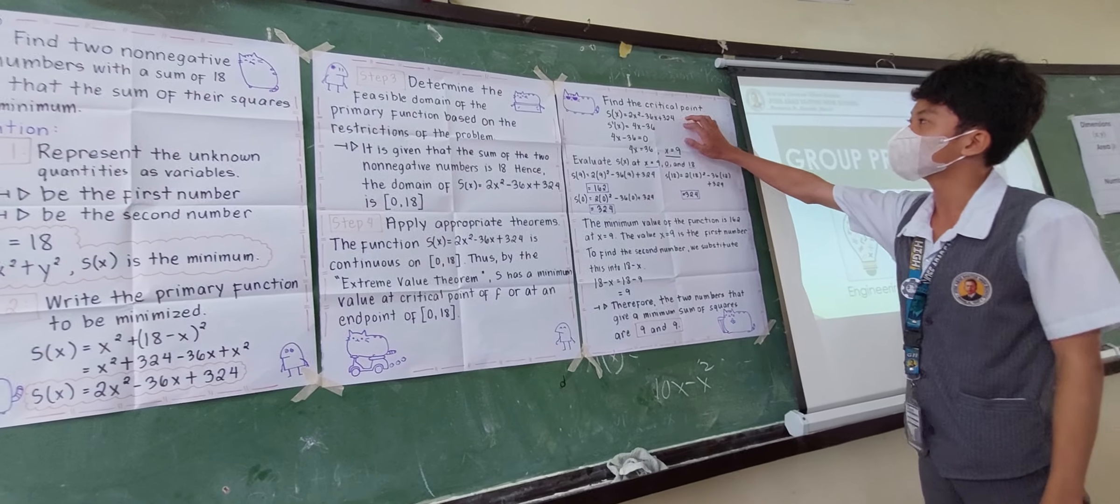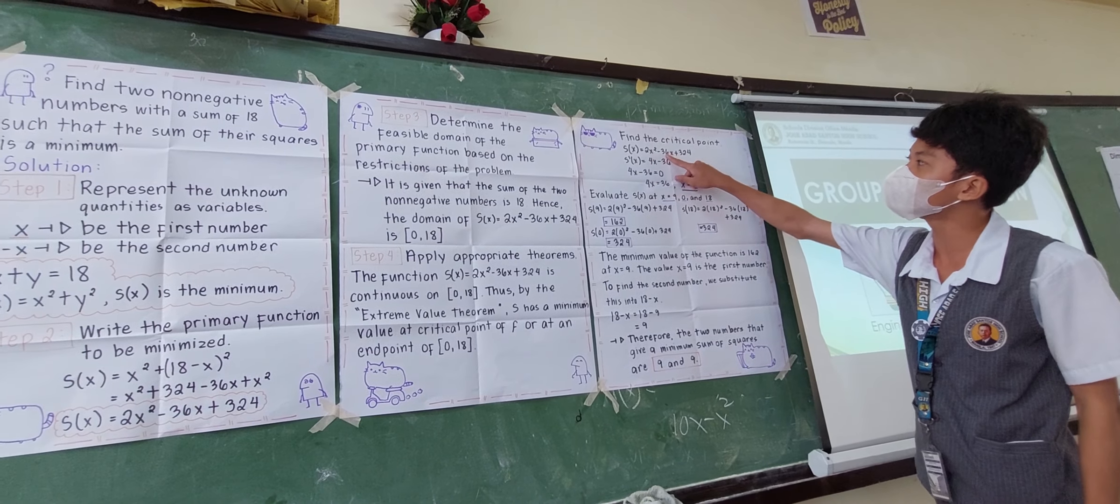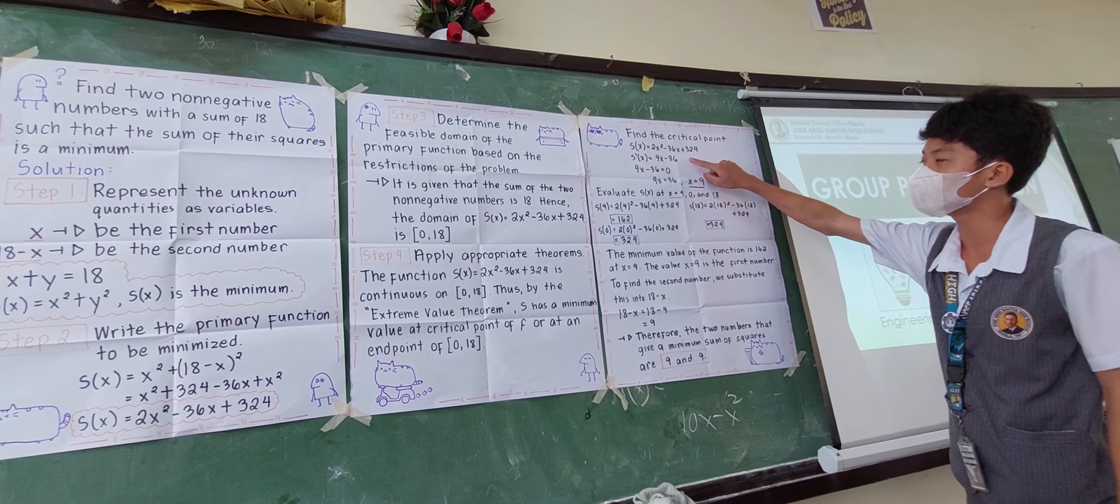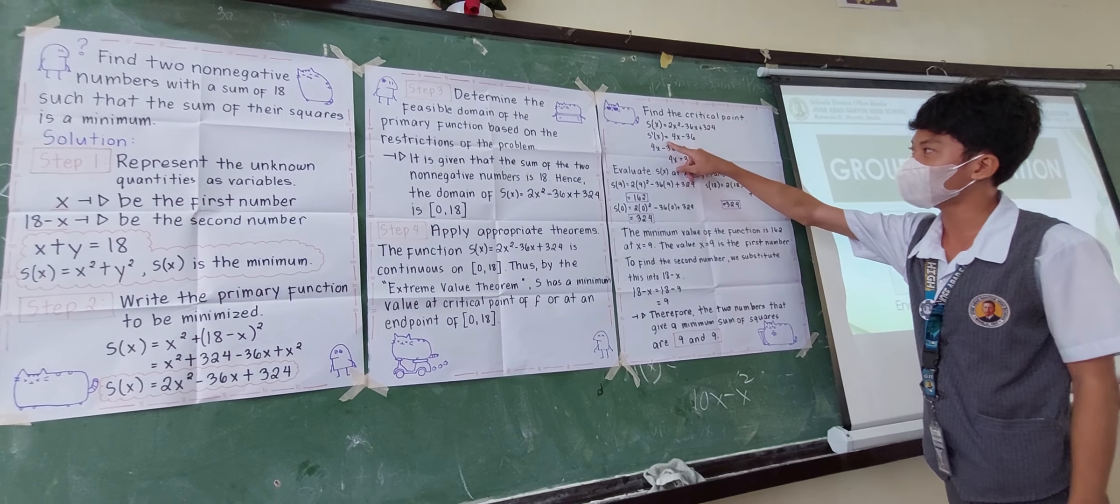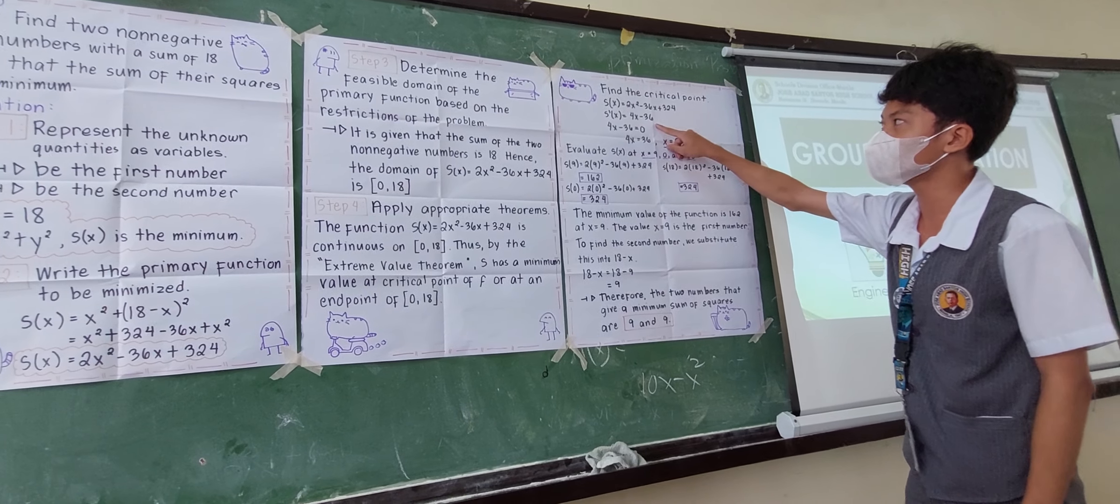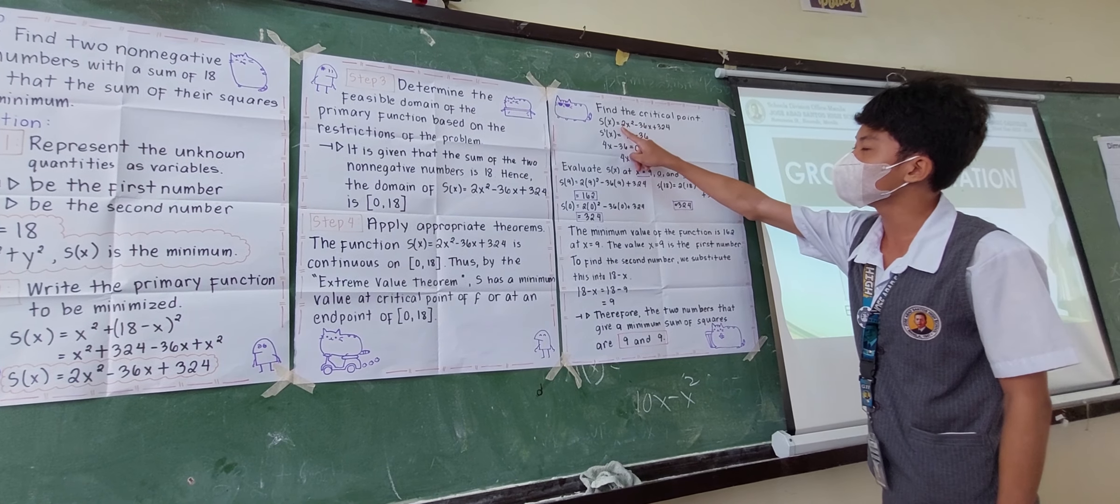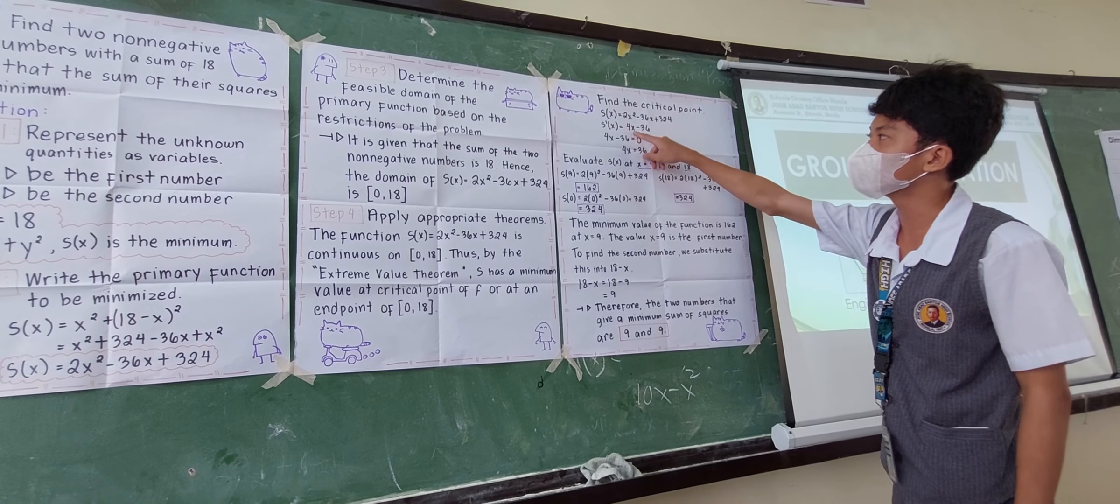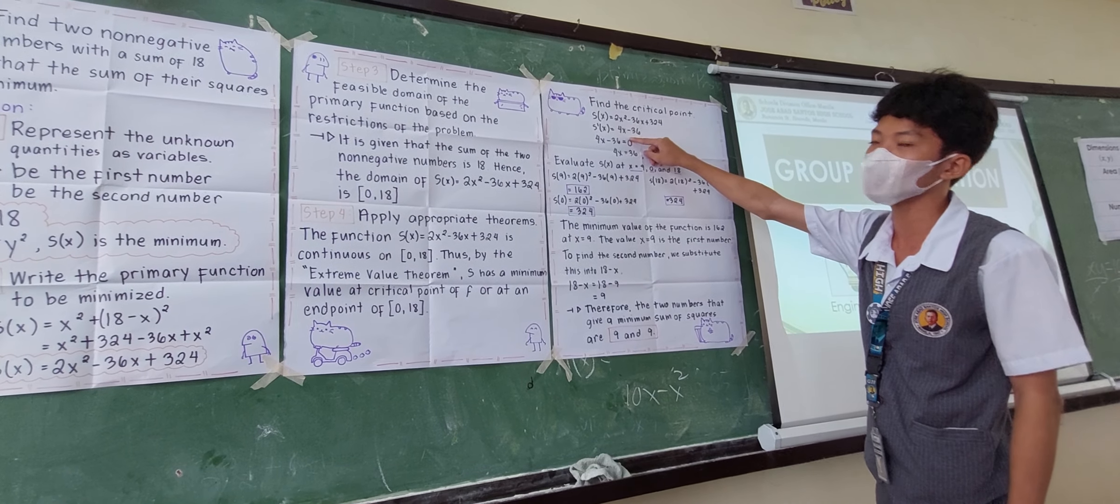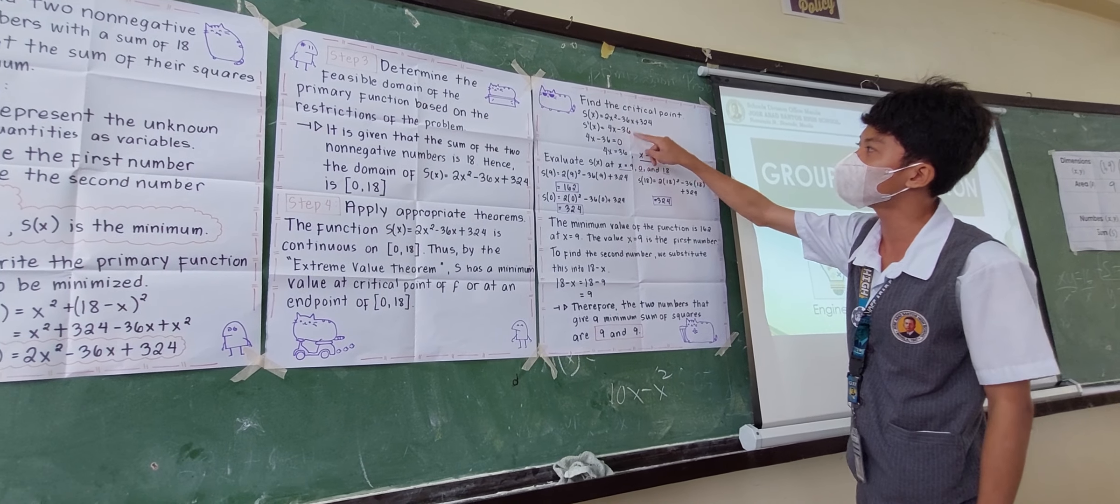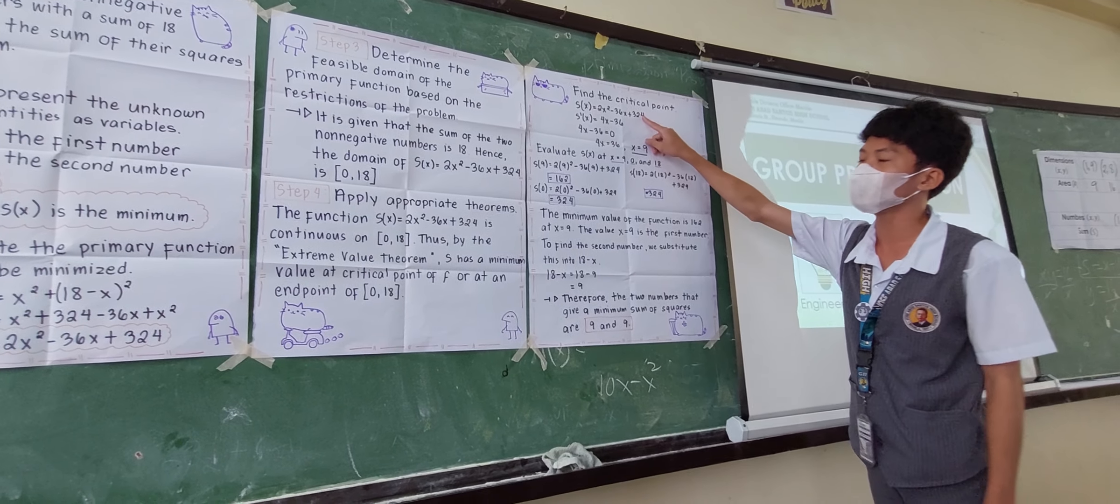Now, find the critical point. S of X is equal to 2X squared minus 36X plus 324. Get the derivative of that. S prime of X is equal to 4X minus 36. 2 times 2 is equal to 4, and 2 minus 1 is equal to 1. So, 4X minus, the derivative of negative 36X is equal to negative 36, and the constant equals 0.